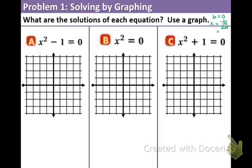you get zero over two a. Zero divided by anything is always zero. So the axis of symmetry for all three is going to be on that y-axis, also known as x equals zero.